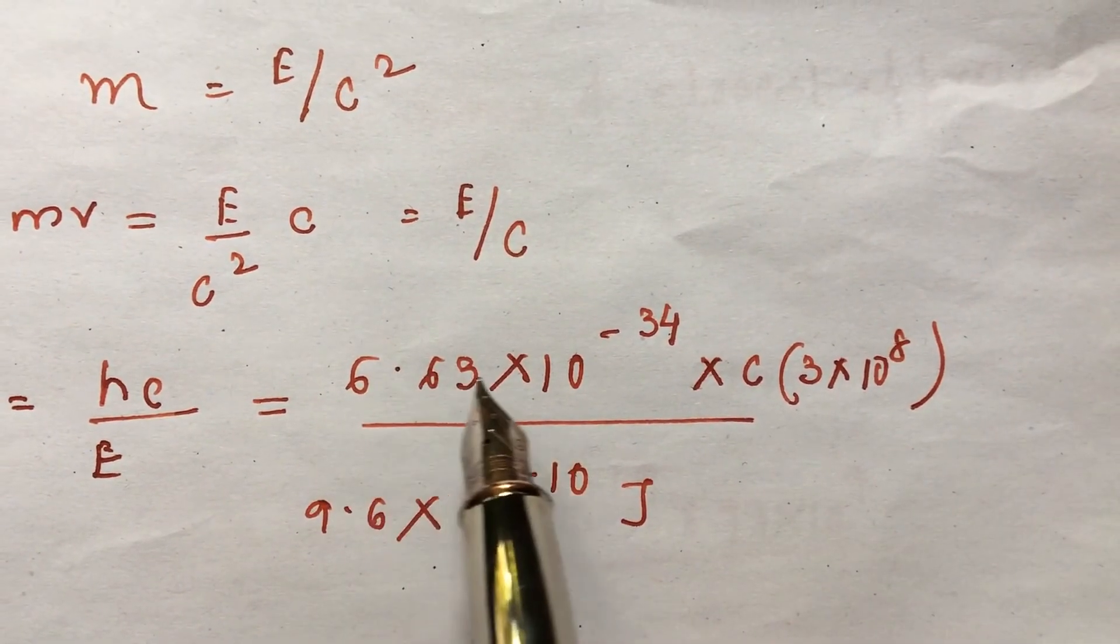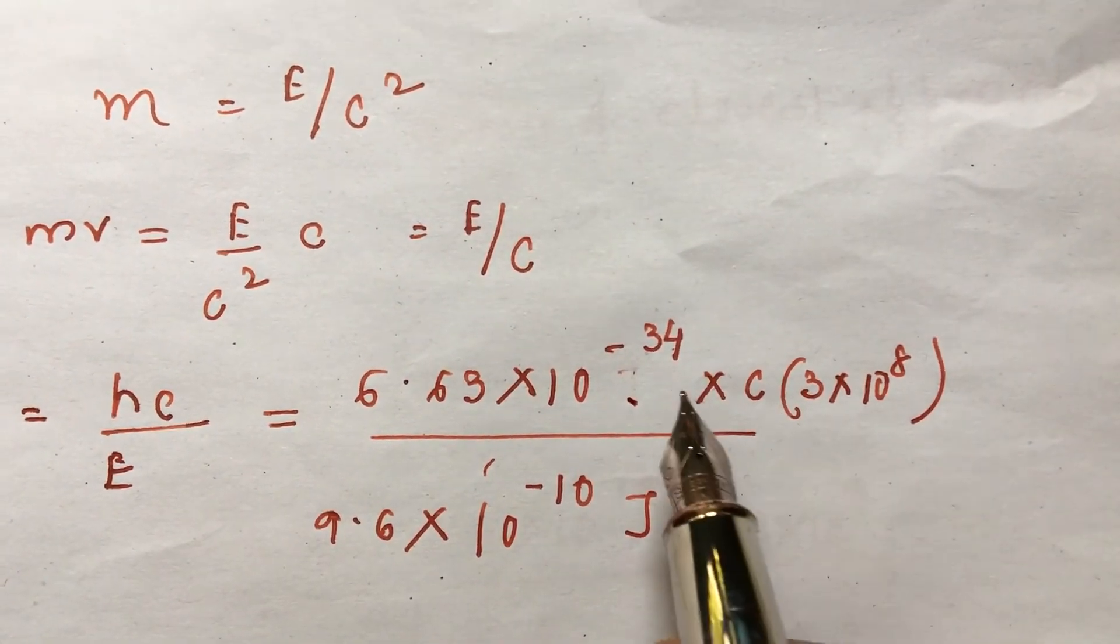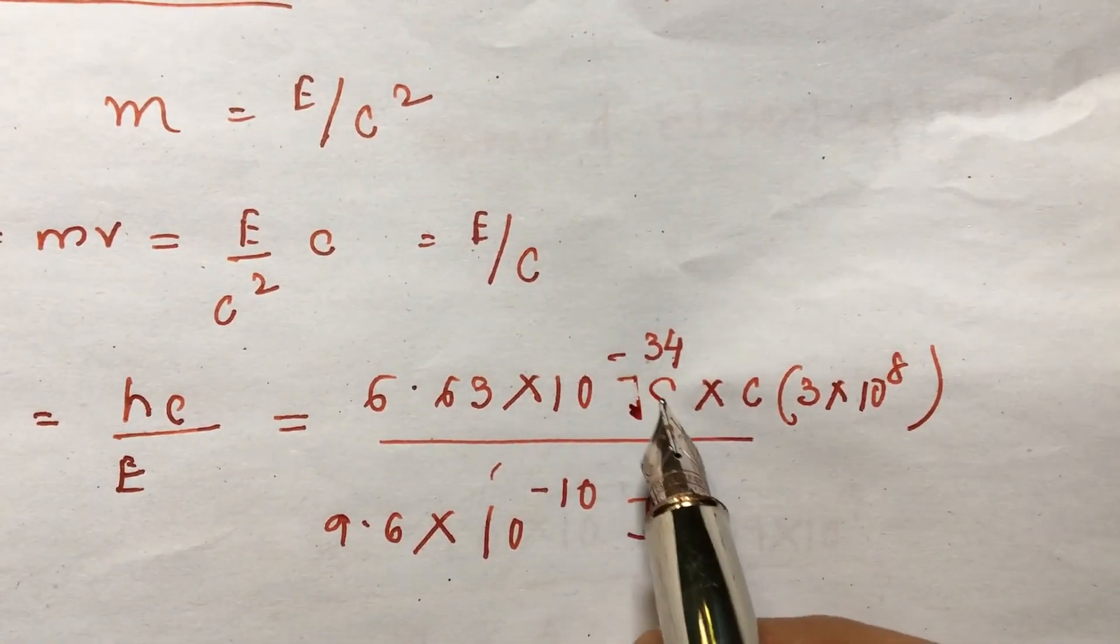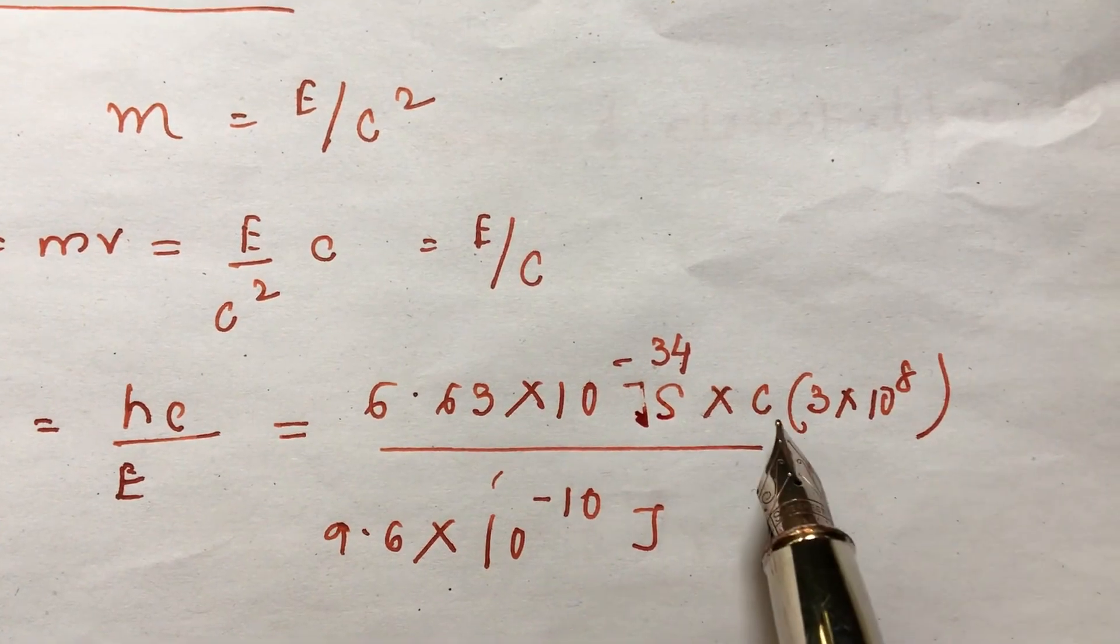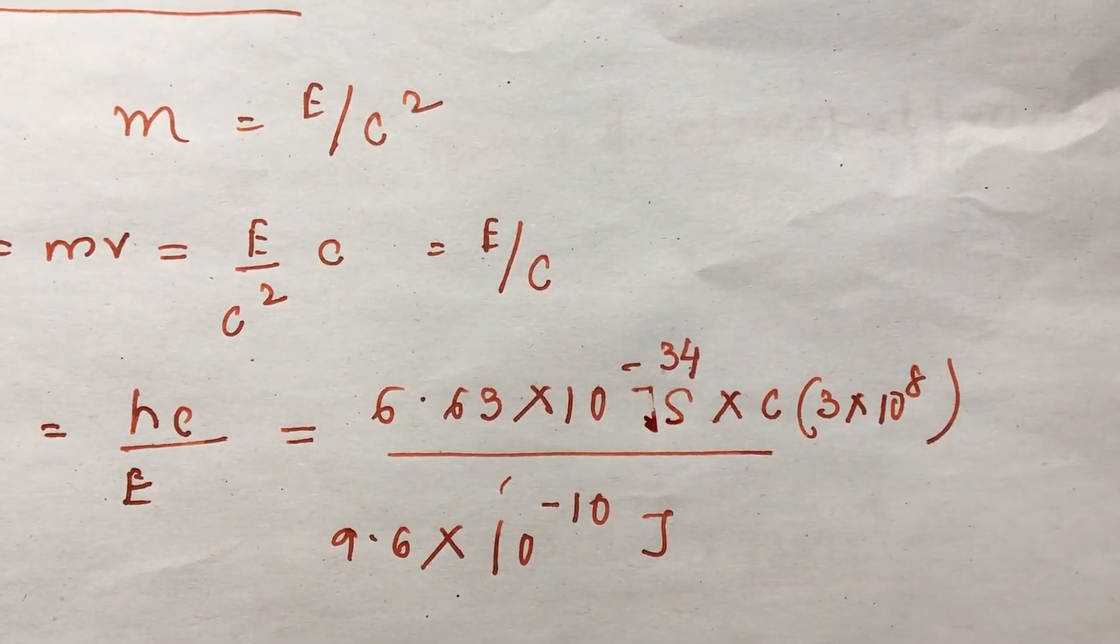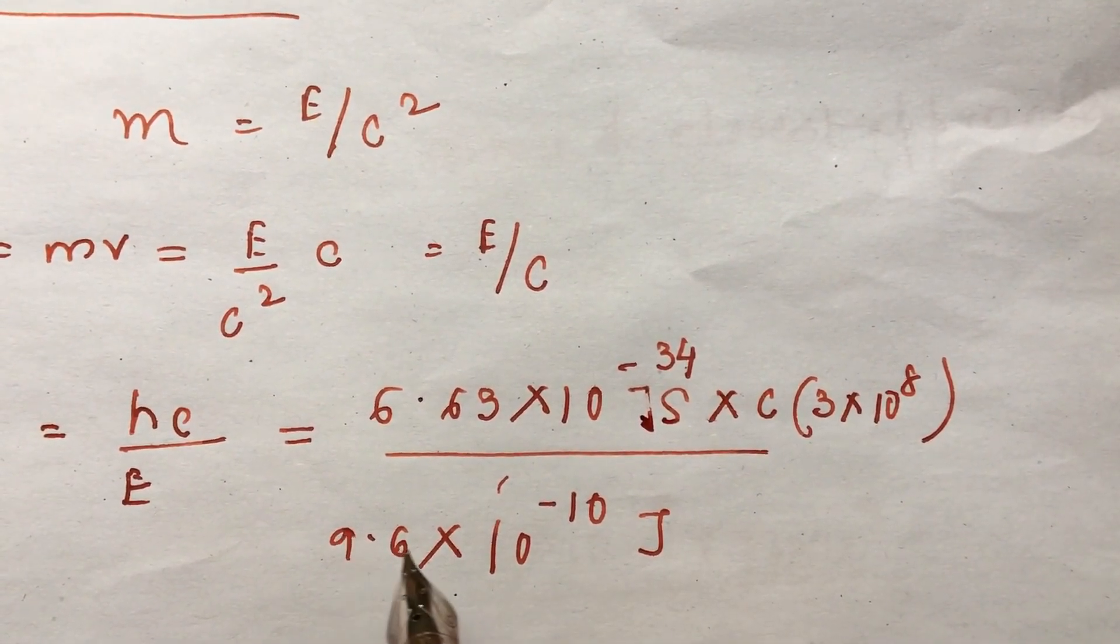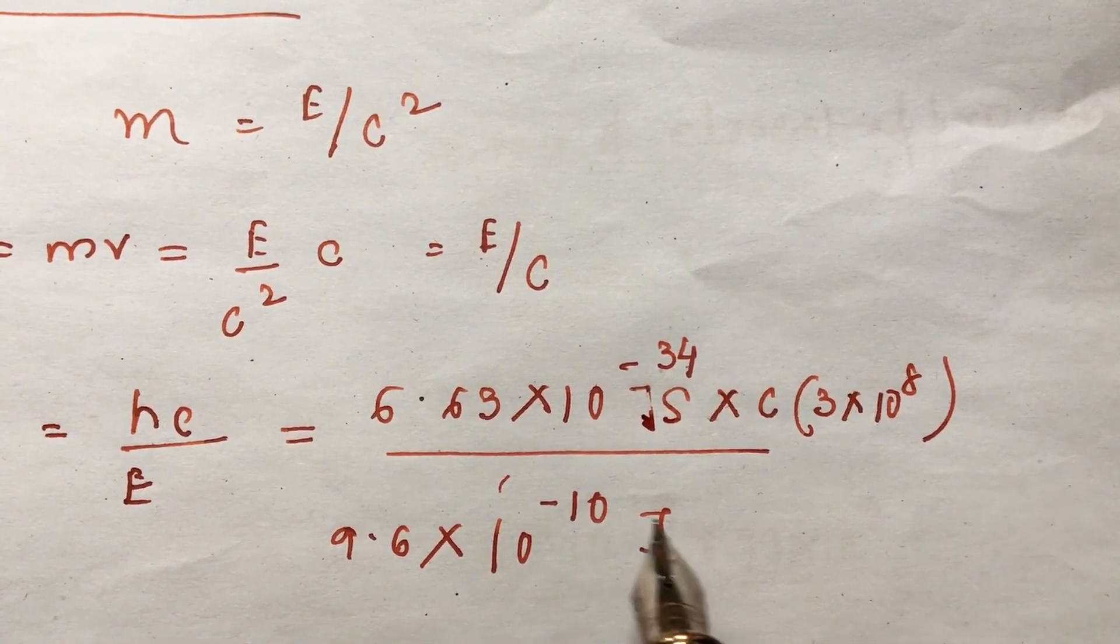We put h equal to 6.63 into 10 to the power minus 34, it is joule second because it is in SI. So it is joule second and c, c value is 3 to the power 8 meter per second and e, that is the energy kinetic energy of the electrons, is 9.6 into 10 to the power minus 10 joule.